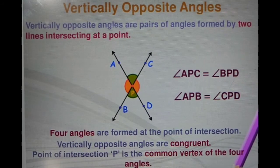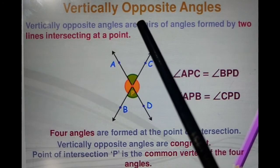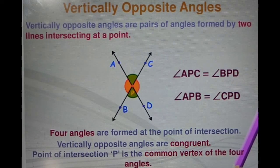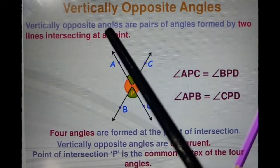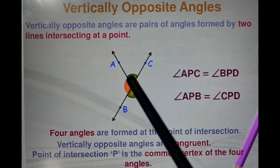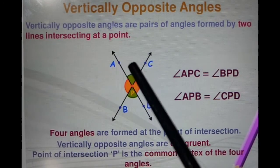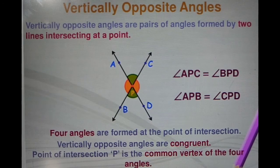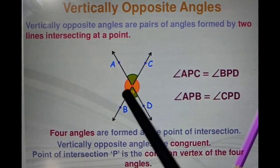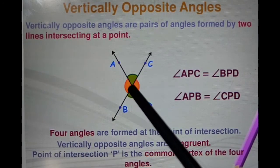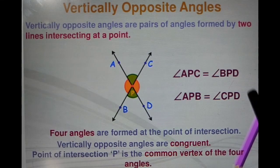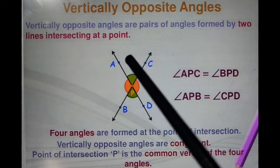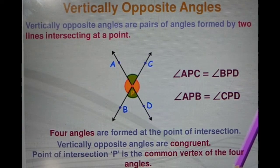Next are the vertically opposite angles. Vertically opposite angles are pairs of angles formed by two lines intersecting at a point. When two lines intersect we get four angles. The opposite angles are called vertically opposite. The two angles with green colors are opposite to each other and the two angles with orange color are opposite to each other. Vertically opposite angles are always equal.